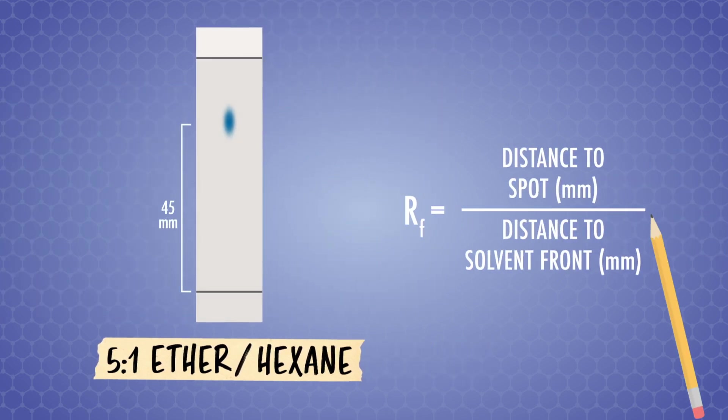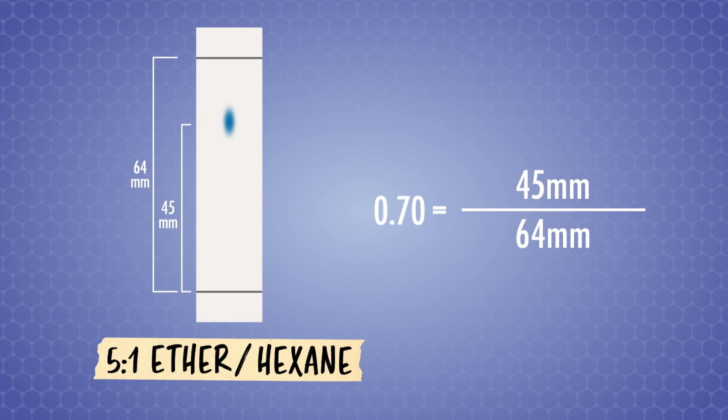Let's do the math, and what do you know, in this solvent system, our RF is 0.70. In the lab, we're not just calculating RF values of spots of pure organic compounds in different solvents. We use chromatography to separate reaction products, like the ether from the side products when making Paxil.